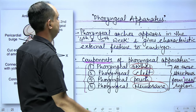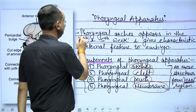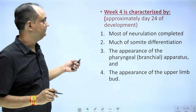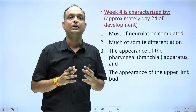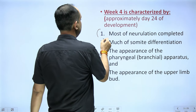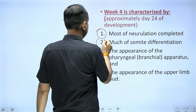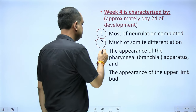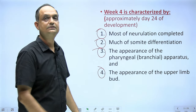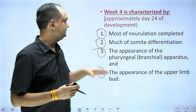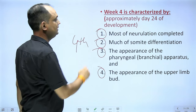The pharyngeal arches start to appear around the fourth week of intrauterine life. The four important characteristics of the embryo in the fourth week are: almost completion of neurulation (formation of neural tube), somite differentiation, appearance of pharyngeal arches, and appearance of upper limb buds.